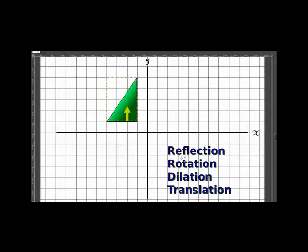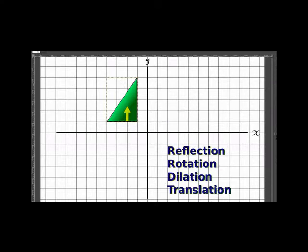Our next word is rotation. So, if I wanted to take this shape and rotate it 90 degrees clockwise, it would look like this. I take the shape and I rotate it 90 degrees clockwise, just like this. That's a rotation. This is also a rotation — I have rotated 180 degrees.